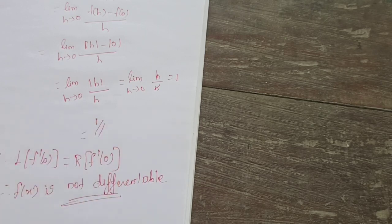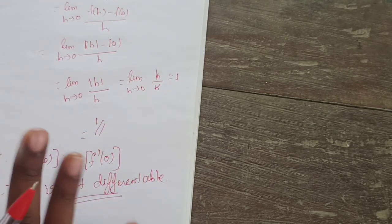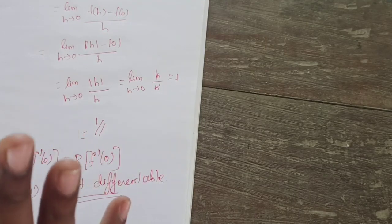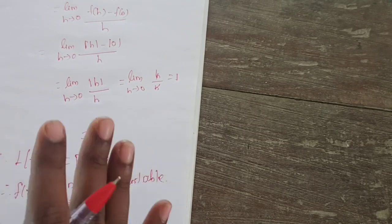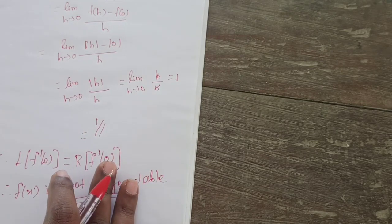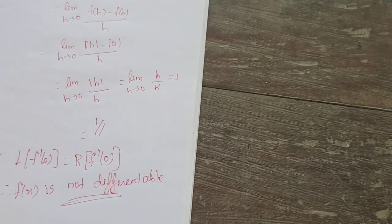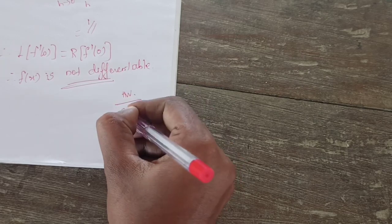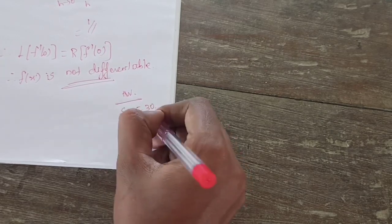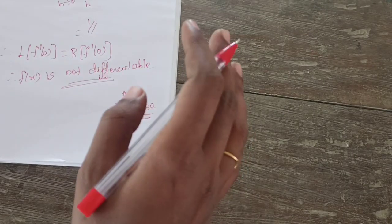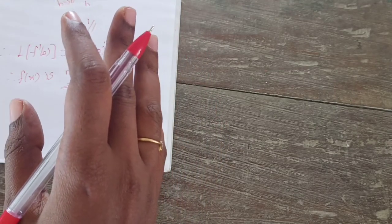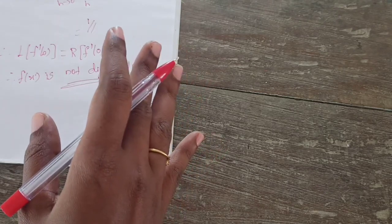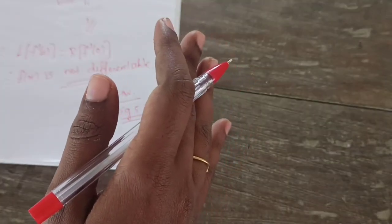So always keep in mind: do not confuse continuity and differentiability. Both involve finding left hand and right hand limits, but the formula is different for differentiability — it is f of x minus f of c divided by x minus c. Example 5.30 in your book, where x squared is given, is your homework. Find L of f dash of 1 and R of f dash of 1 the same way. If both are equal, say it is differentiable; if not equal, say it is not differentiable.